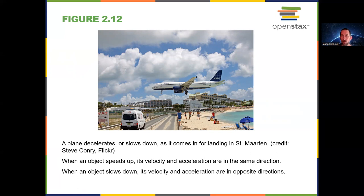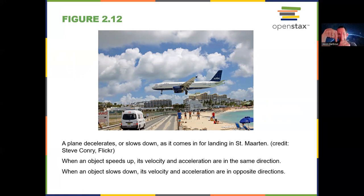Velocity and acceleration are both vectors. When those vectors are in the same direction — whether both to the left, both upward, or both to the right — that describes an object that's speeding up. When the velocity and acceleration vectors are in opposite directions, that describes an object that's slowing down. We'll see this numerically with the motion diagrams in your note packet.